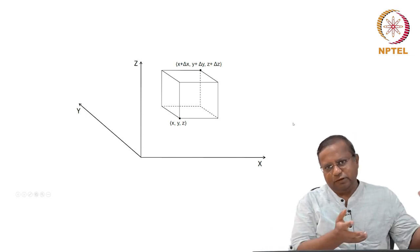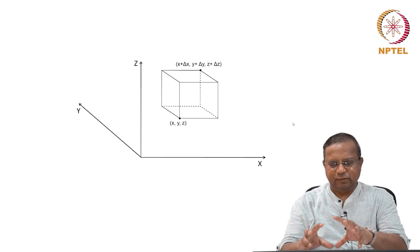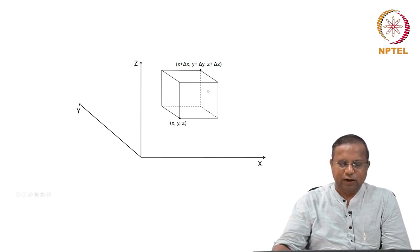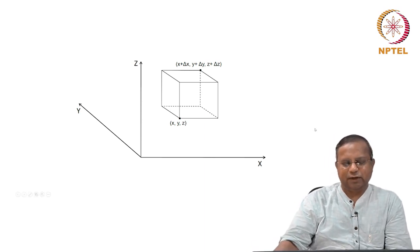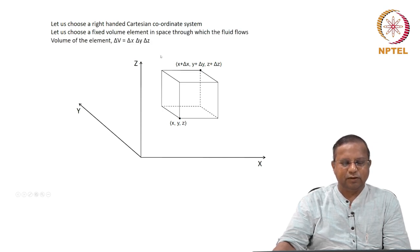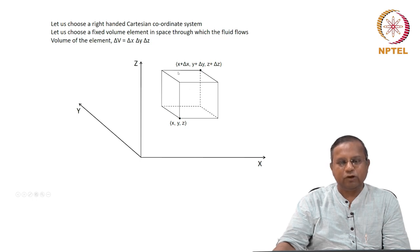This is a fluid system, which means fluid is flowing in all directions in the system. We are focusing on one direction at a time. The volume of the element is delta x times delta y times delta z, as is obvious from this cuboid.